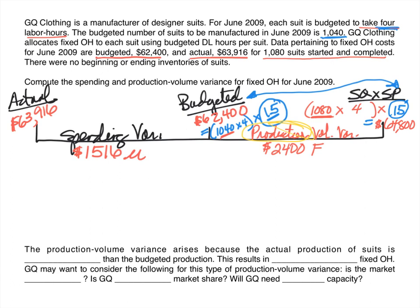With fixed overhead, you do have a flexible budget variance, but it's equivalent to the spending variance — they are the same thing in this case. So the spending variance also serves as the flexible budget variance for fixed overhead.